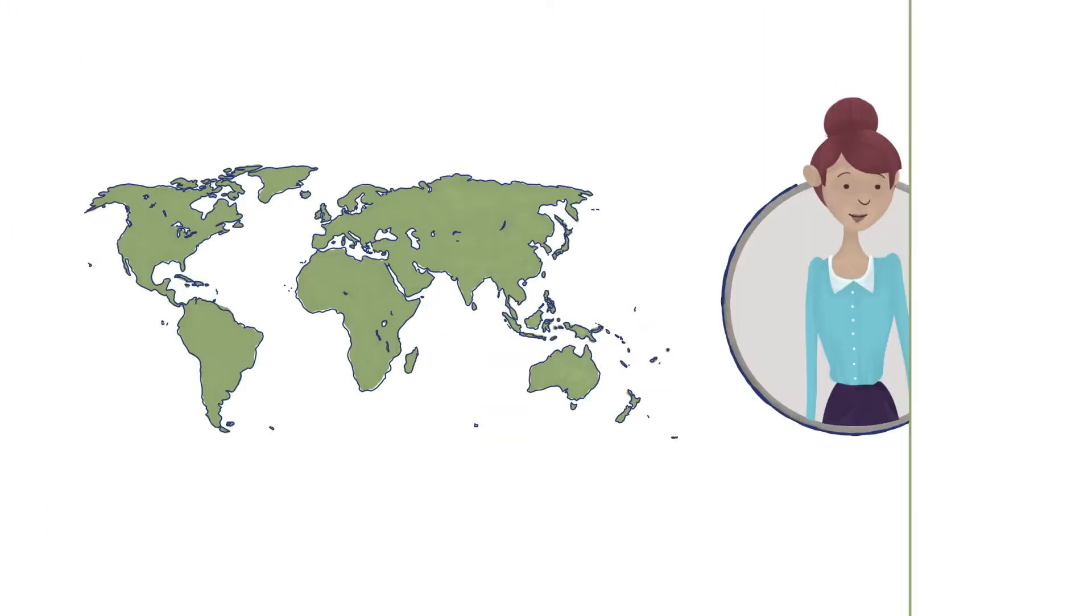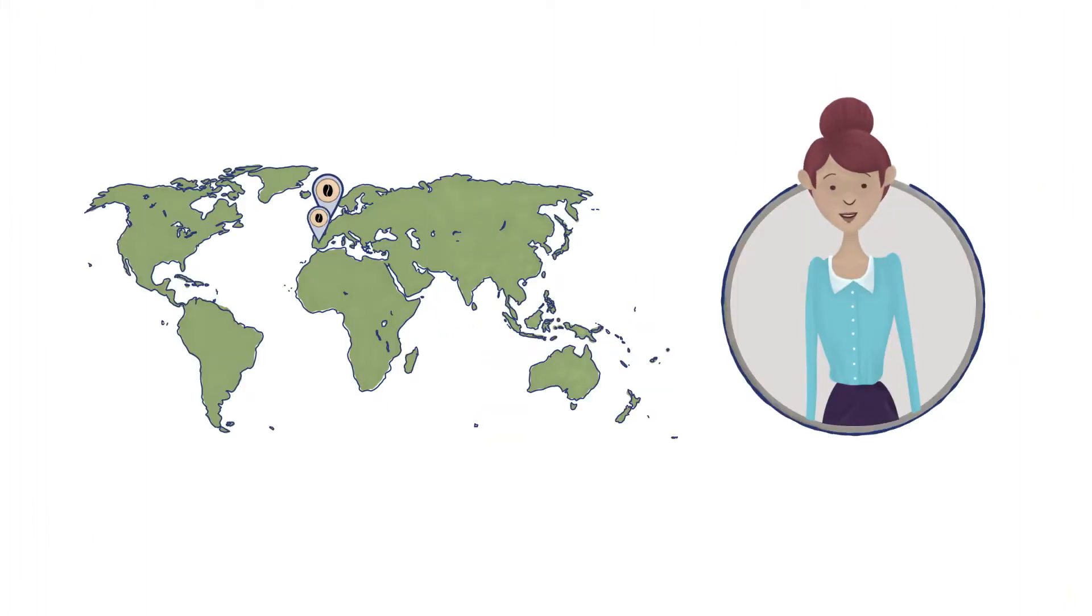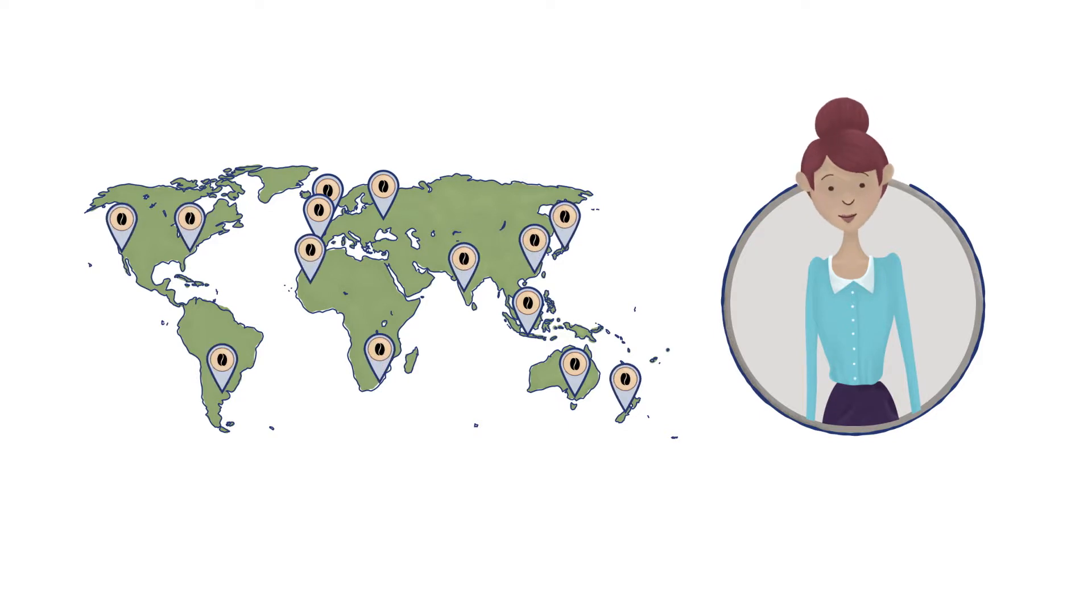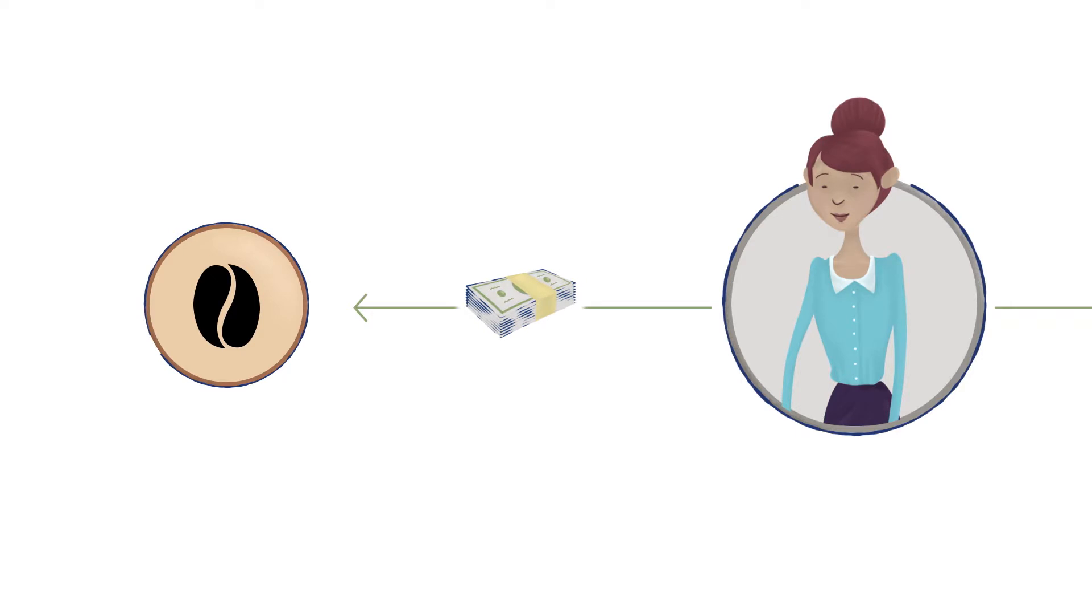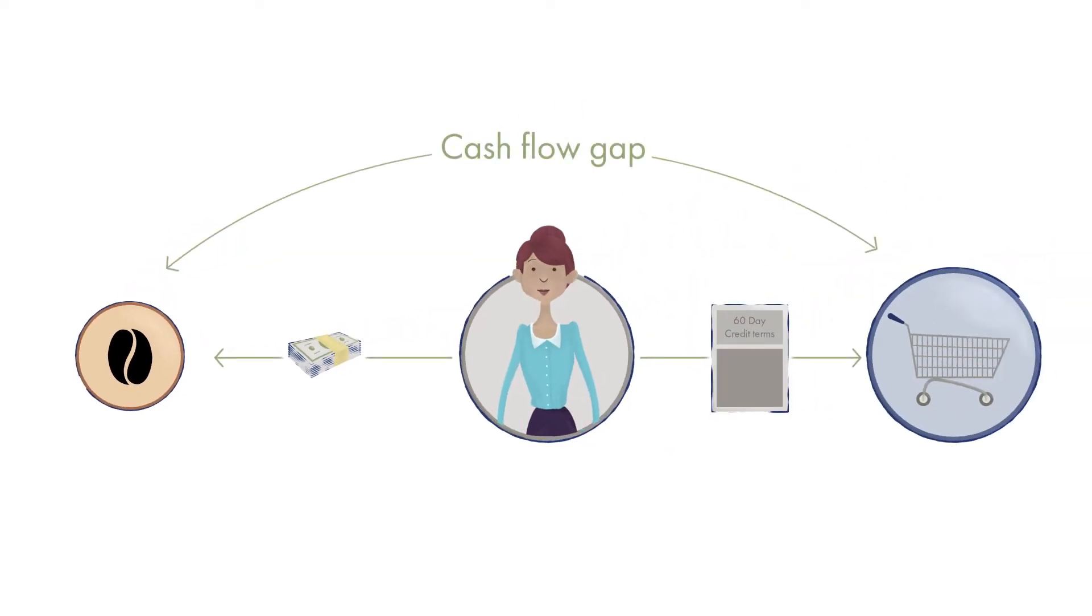Let's see how this works. Annie runs a business that buys coffee products from several small suppliers around the world, which she sells to her customers, who are big established retailers, on 60-day credit terms. Her small suppliers, however, need faster payments to run their businesses. This cycle creates a cash flow gap.